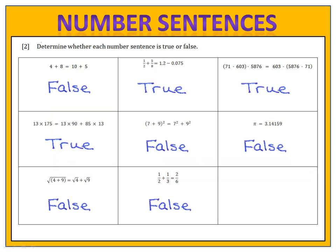We found that the first one was false, the second true, and the third true. Number 4 was true; 5 and 6 were both false. Pi equals 3.14159 is worth a quick mention — it looks like it might be true, but remember, pi has an infinite number of digits, and this is only a rounded version. Therefore it's not equal — it's a false statement. The last two are also false.